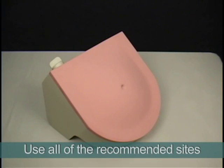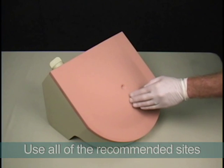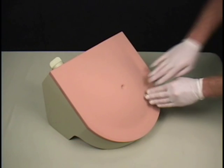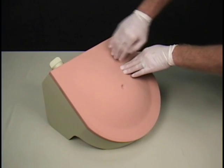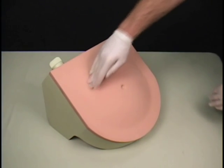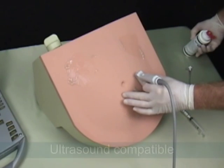Paracentesis can be performed on either of the recommended sites: the midline below the umbilicus or in the left or right lower quadrants medial and anterior, 4-5 cm above the anterior superior iliac spine. When using ultrasound with the model,